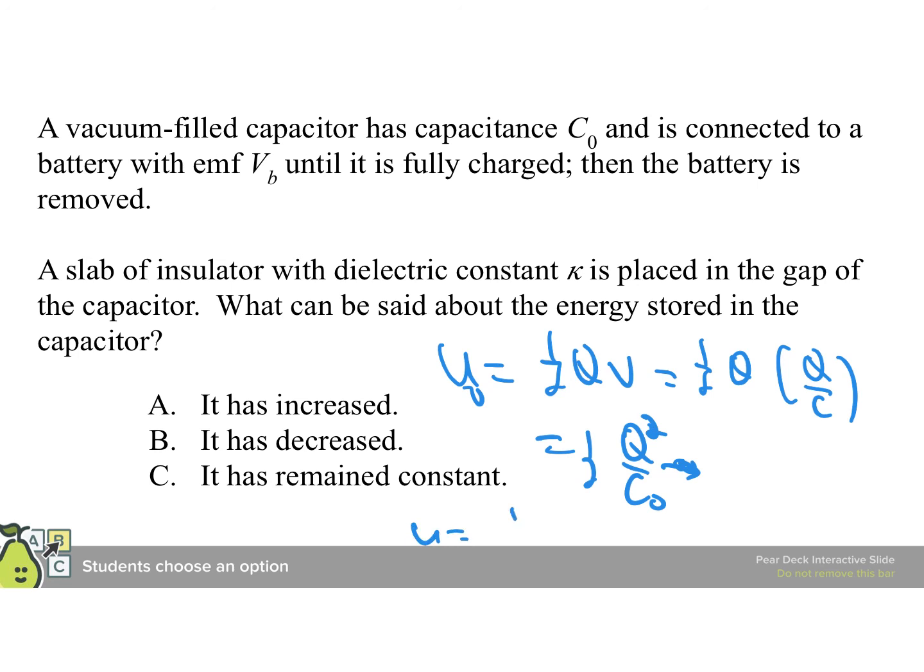Our new energy, of course, is one-half Q squared over C zero. So the ratio of new energy to old energy is the original capacitance over the new capacitance, but the new capacitance is kappa times the original, so it becomes one over kappa, which means since kappa is always more than one, it is decreased.